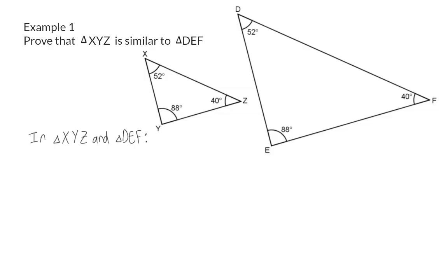In the sketch, we only have information about the angles, so I'm going to see which angles are equal. Angle X is equal to angle D, and they are both 52 degrees.